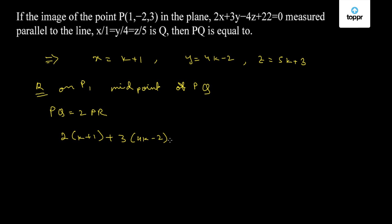So we have 2(k+1) + 3(4k-2) - 4(5k+3) + 22 = 0. So we have 2k+2+12k-6-20k-12+22 = 0. So we have 6k equal to 6. We have k equal to 1.